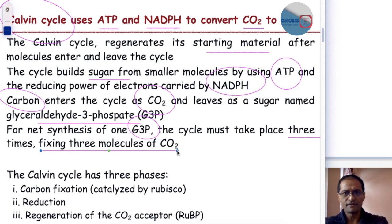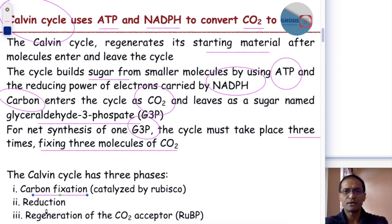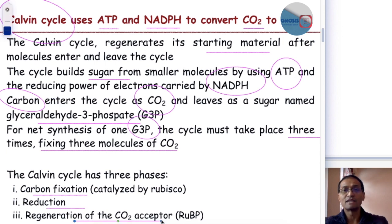The Calvin cycle has three very distinct phases: the carbon fixation phase, the reduction phase, and the regeneration of the carbon dioxide acceptor, which is ribulose bisphosphate (RuBP).